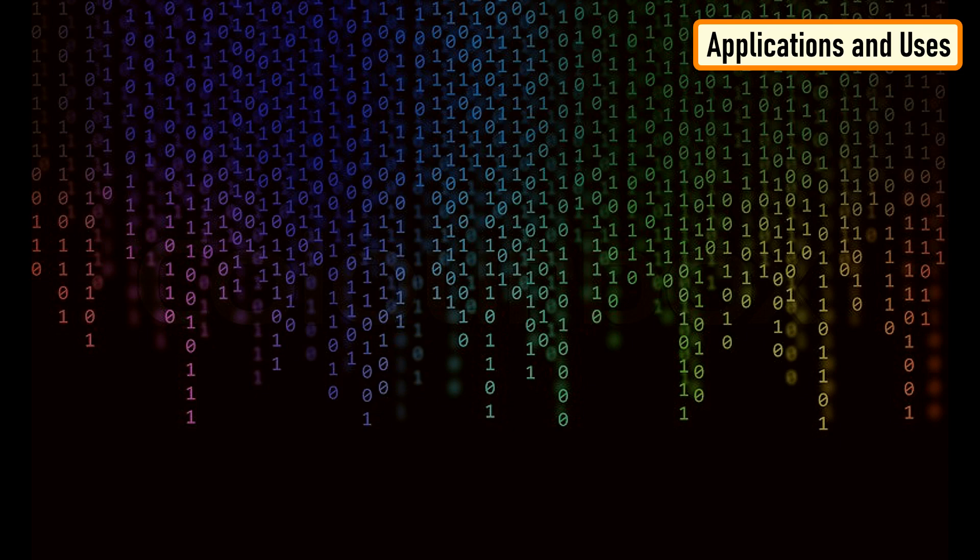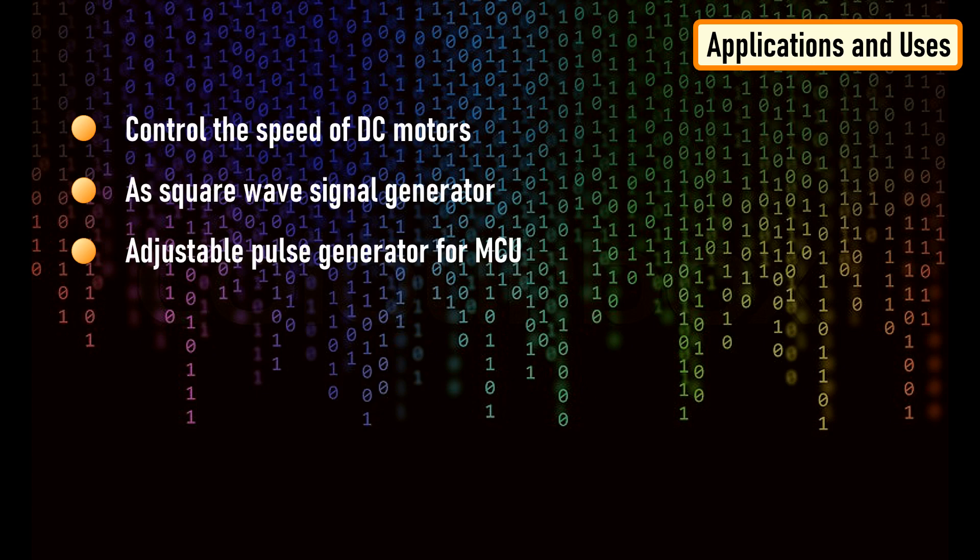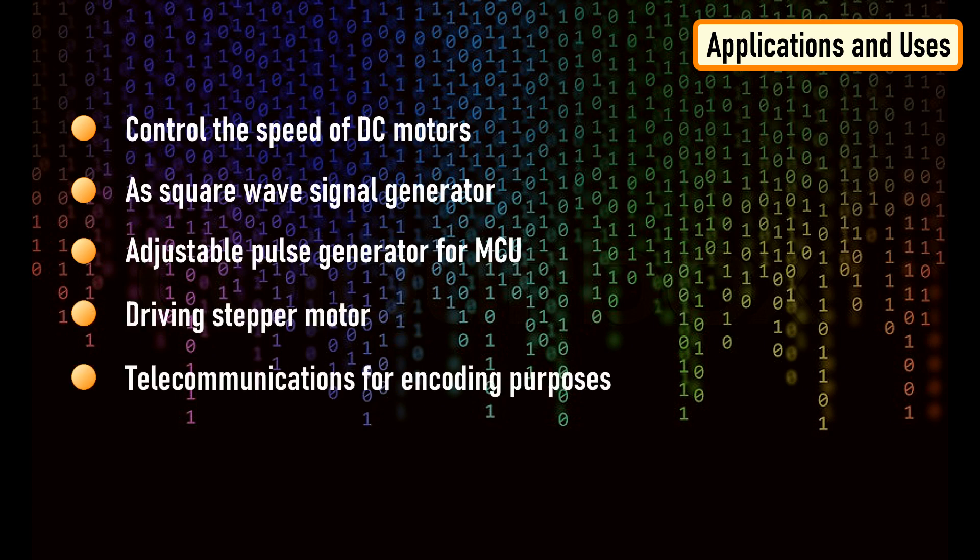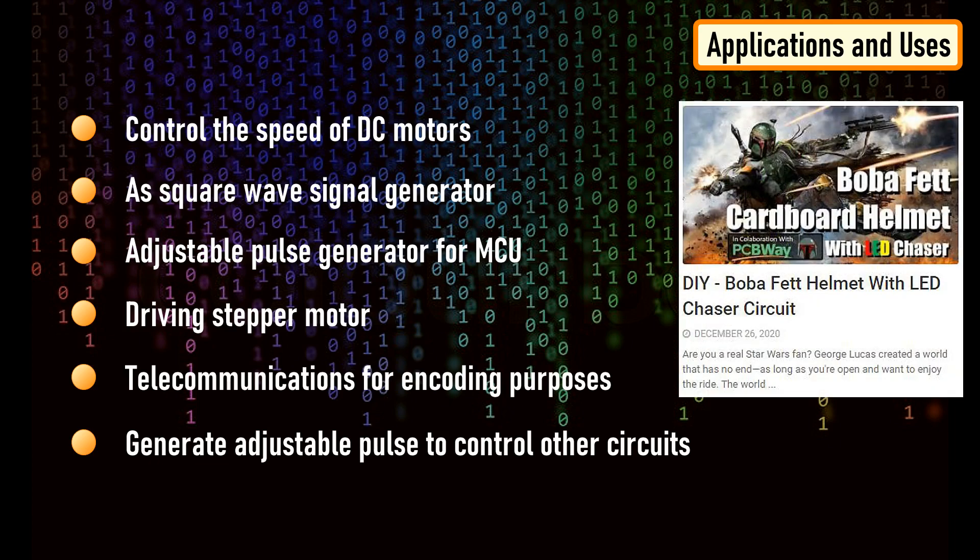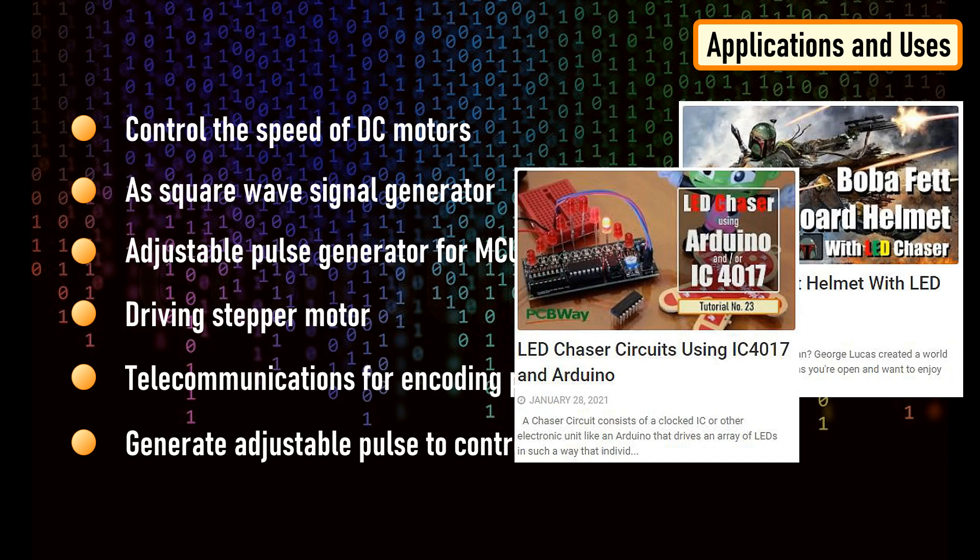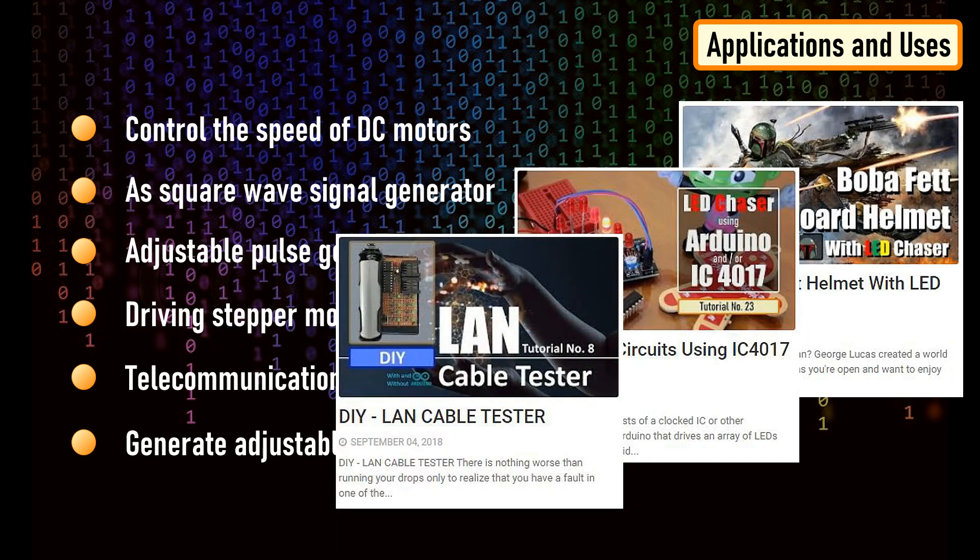This circuit can be used to control the speed of DC motors, as a square wave signal generator, adjustable pulse generator for MCUs, driving stepper motors, in telecommunication for encoding purposes, to generate adjustable pulse to control other circuits. I have used this in few of my old projects like DIY Boba Fett helmet with LED Chaser circuit, LED Chaser circuit using IC4017 and Arduino, DIY LAN cable tester.